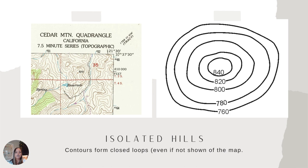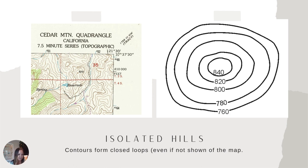Contour lines always form closed loops. Even if your map doesn't show the complete loop, it's because they continue onto the next map — for example, the Cedar Mountain quadrangle connects to the Tracy quadrangle. On simpler example maps, you'll actually see the isolated hill or closed loop. In lab you'll work with a combination of quadrangles and simpler example maps.